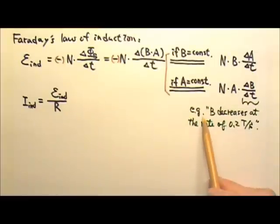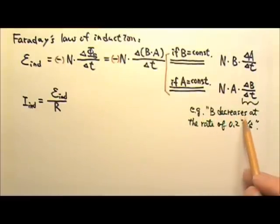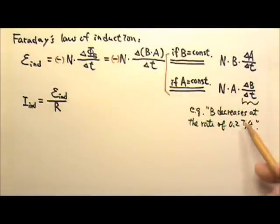For example, a problem may say that the magnetic field decreases at the rate of 0.2 teslas per second. That means delta b over delta t is 0.2 teslas per second.